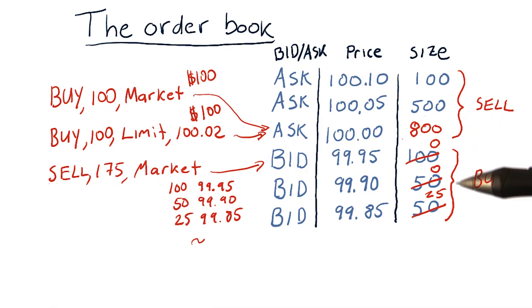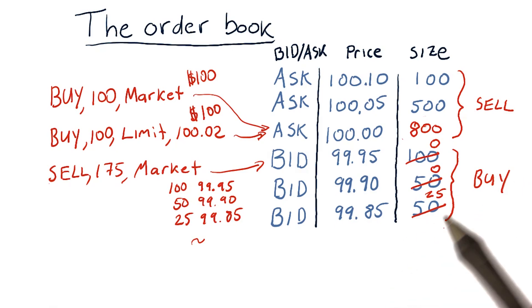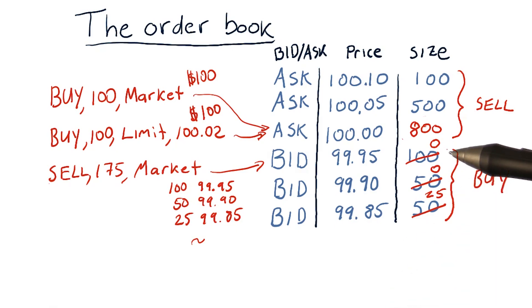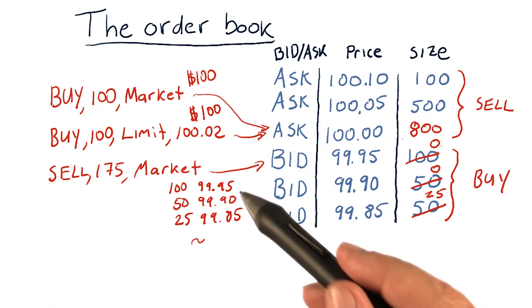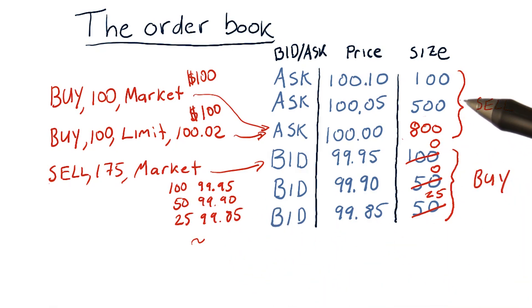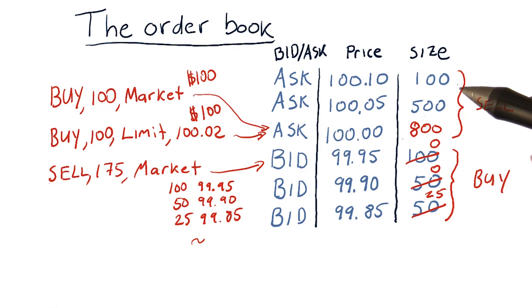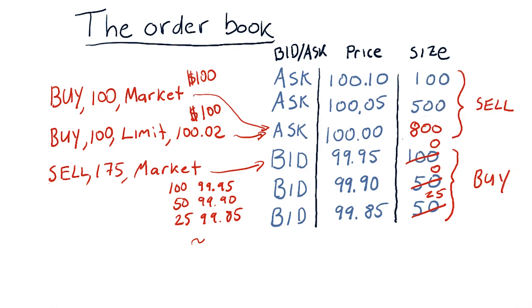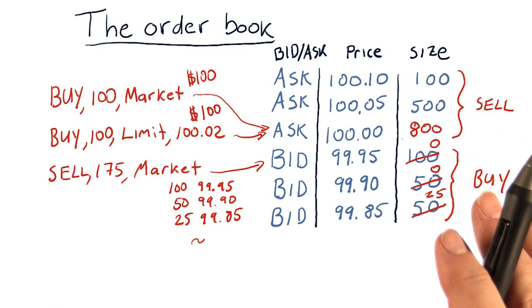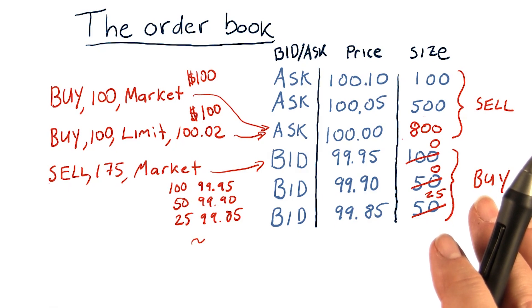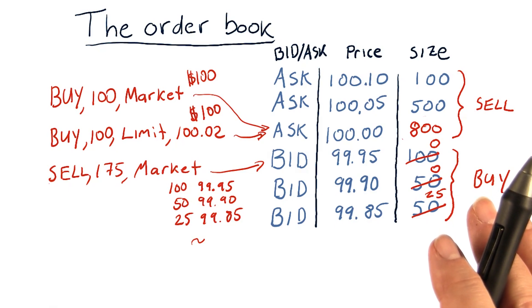Note that as time has gone on, the executed prices have been decreasing. Clearly that's a consequence of there being much more sell pressure than buy pressure. So that's how the order book works, and how exchanges use order books to facilitate transactions between their clients.